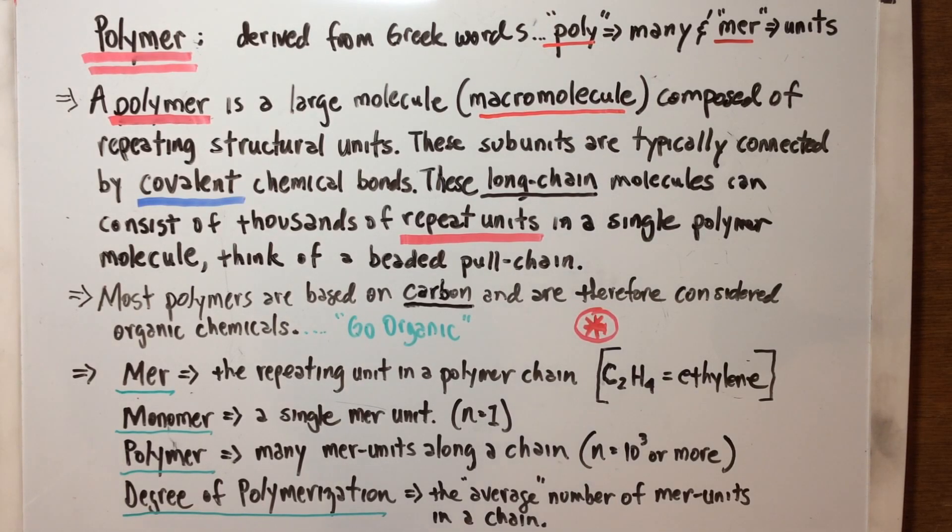What I gave yesterday was the important terms and concepts, and now I want to start going into some of the basics. First, look at the word polymer. It is derived from Greek words: poly meaning many and mer meaning units. So polymer means many units, and that's exactly how we would define a polymer. The polymer is a large molecule which we call a macromolecule that is composed of repeating structural units.